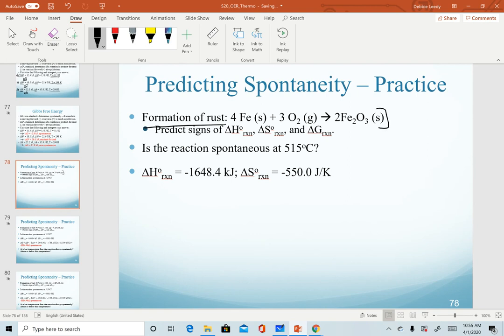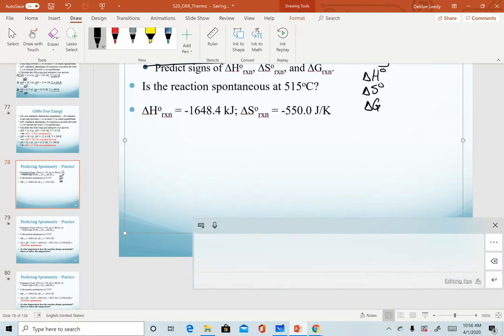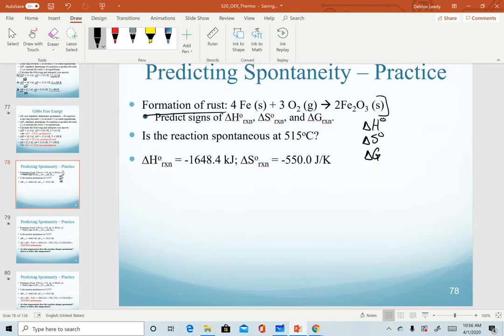I first want you to start by predicting the signs of enthalpy, entropy, and delta G. For enthalpy, we're looking at types of reactions, whether we're making or breaking bonds. Recognize in this reaction, we have a combination reaction. Most combination reactions we predict to be a negative value. We are forming more bonds, which is an exothermic process.